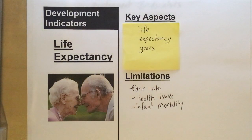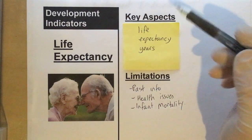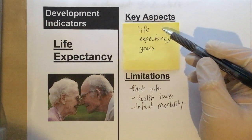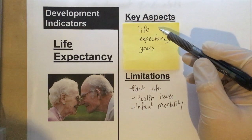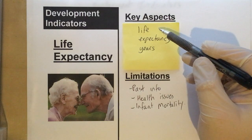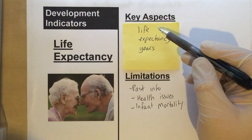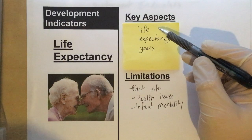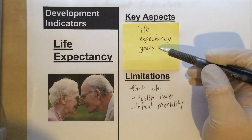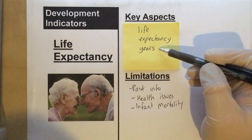Let's have a look particularly at life expectancy. It's the point when a child is born — how long are they expected to live, based upon all the information that the government has available to them at that moment to predict or estimate the life expectancy. It's measured in years.